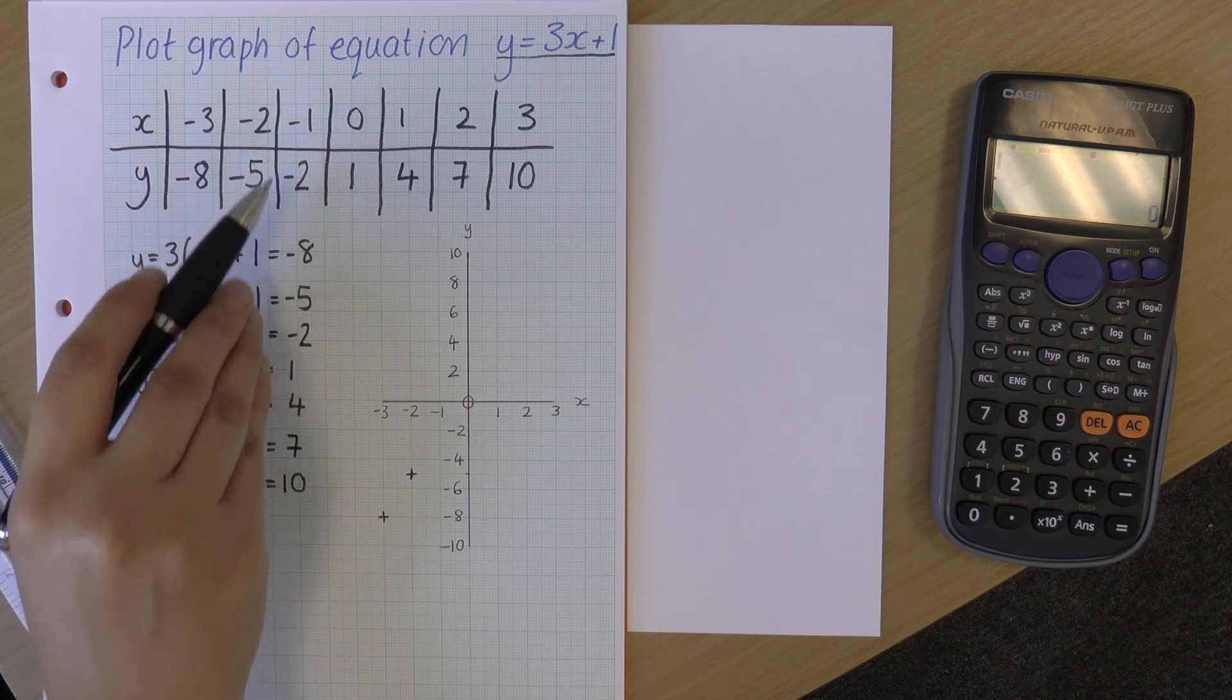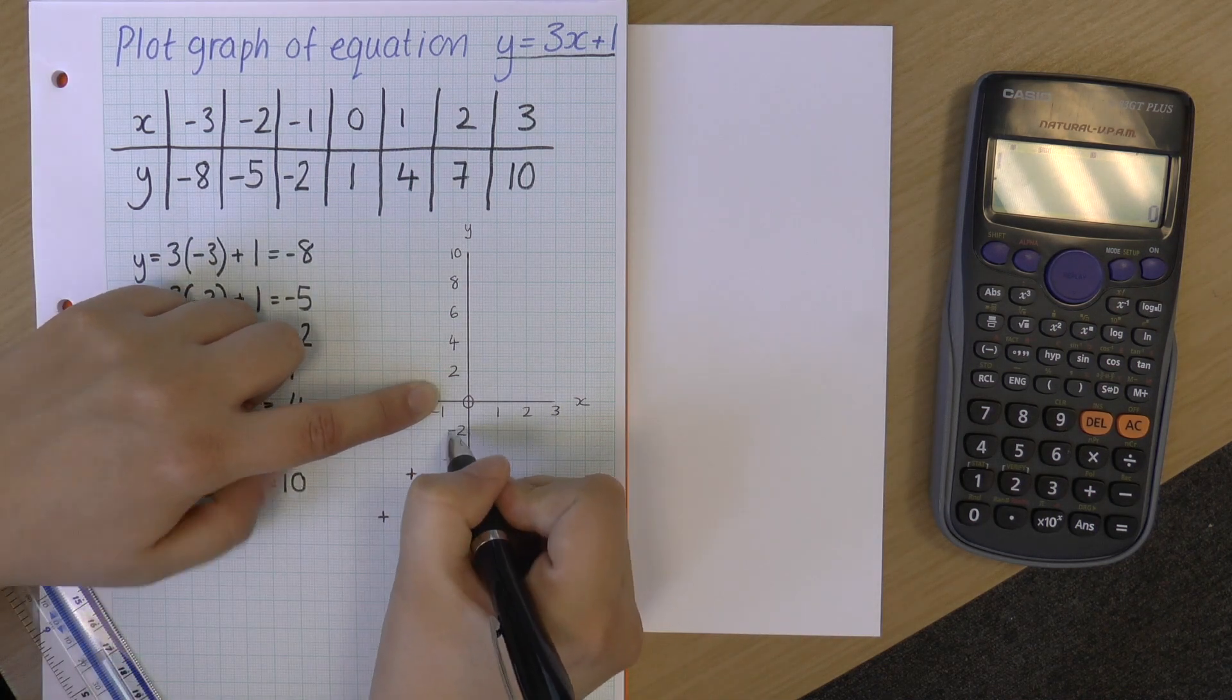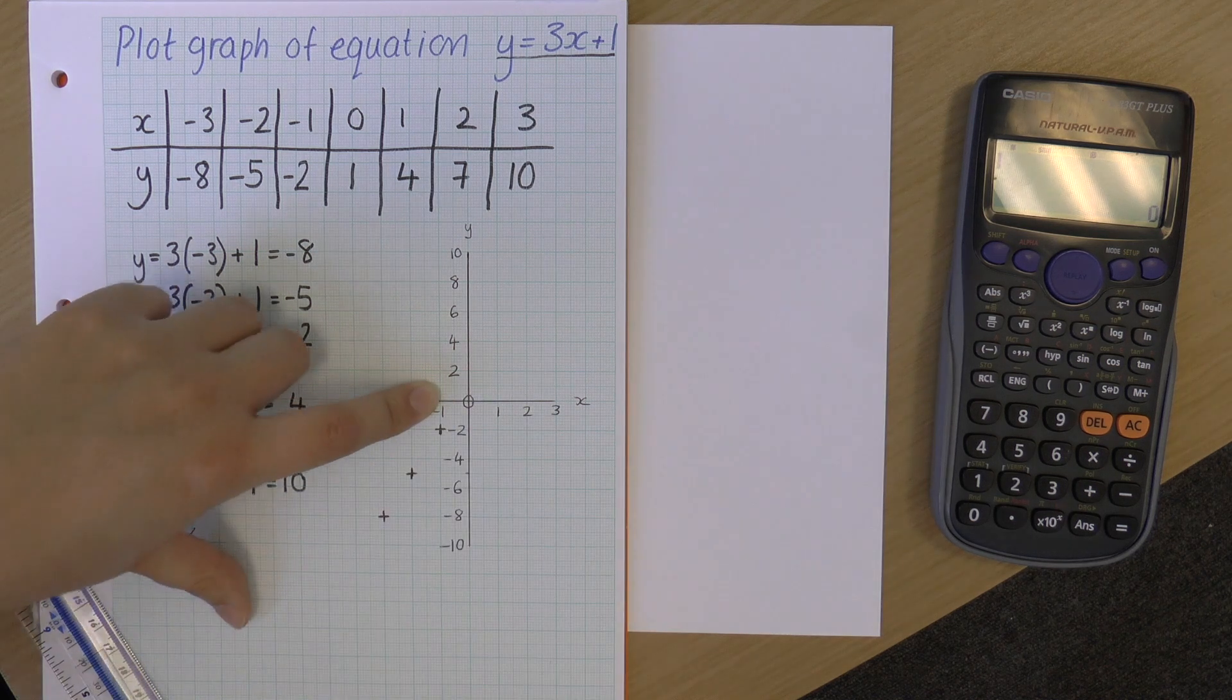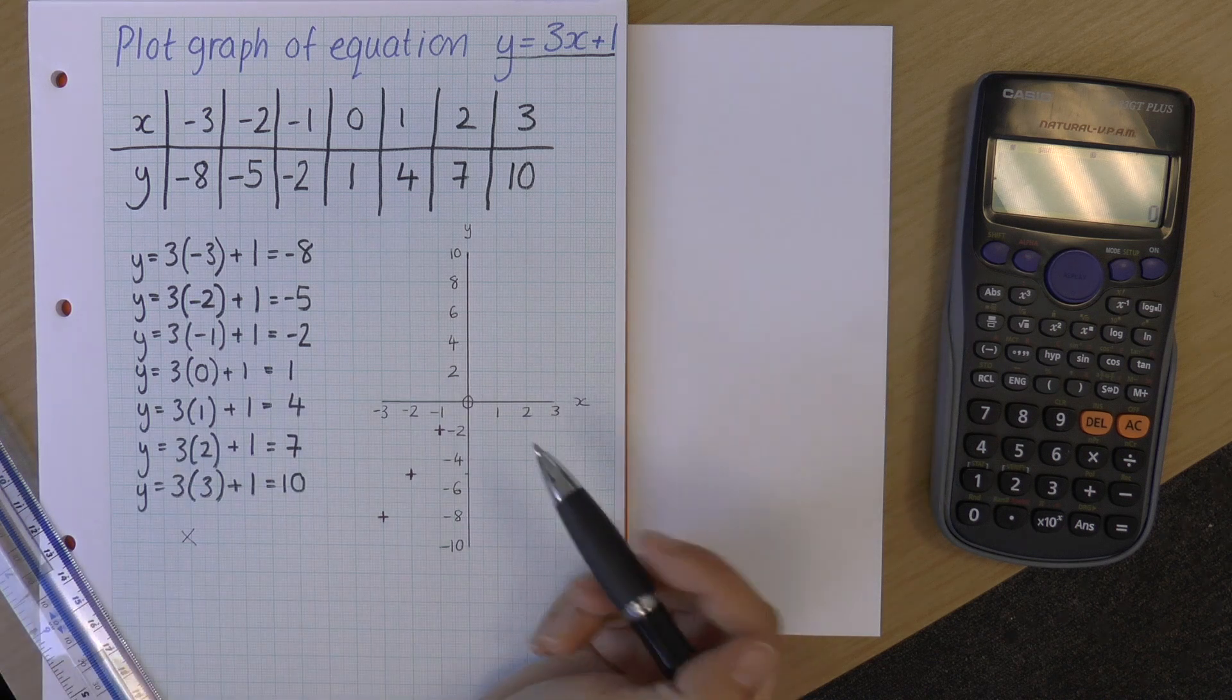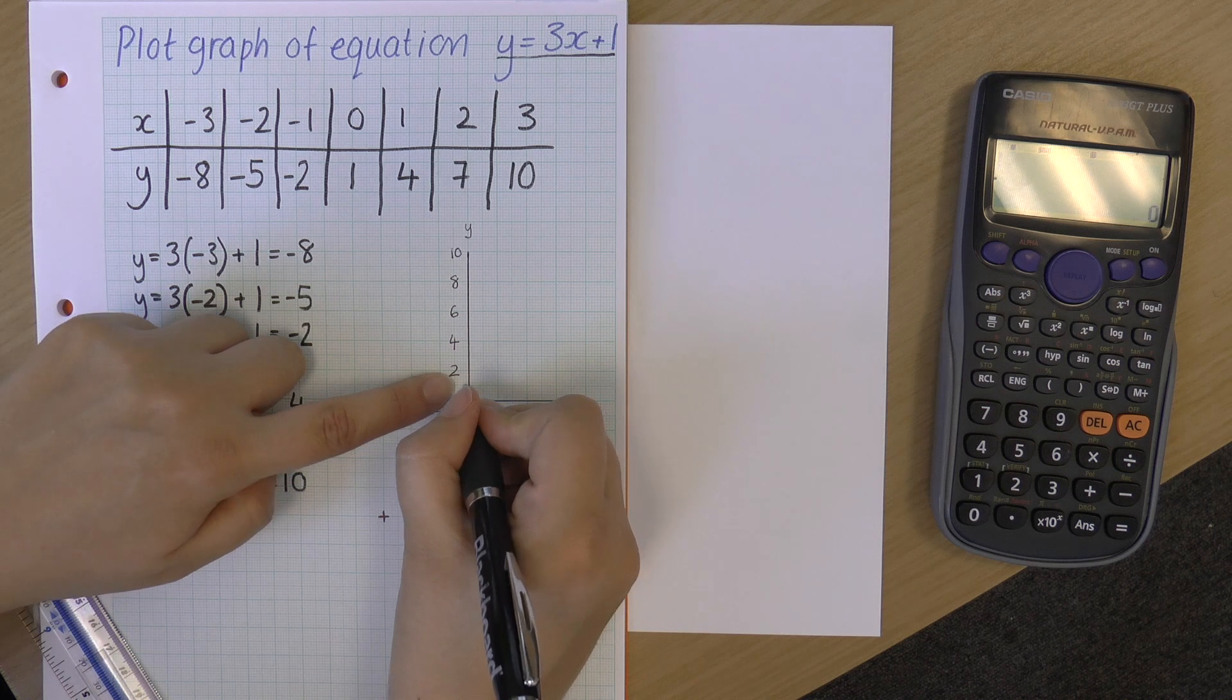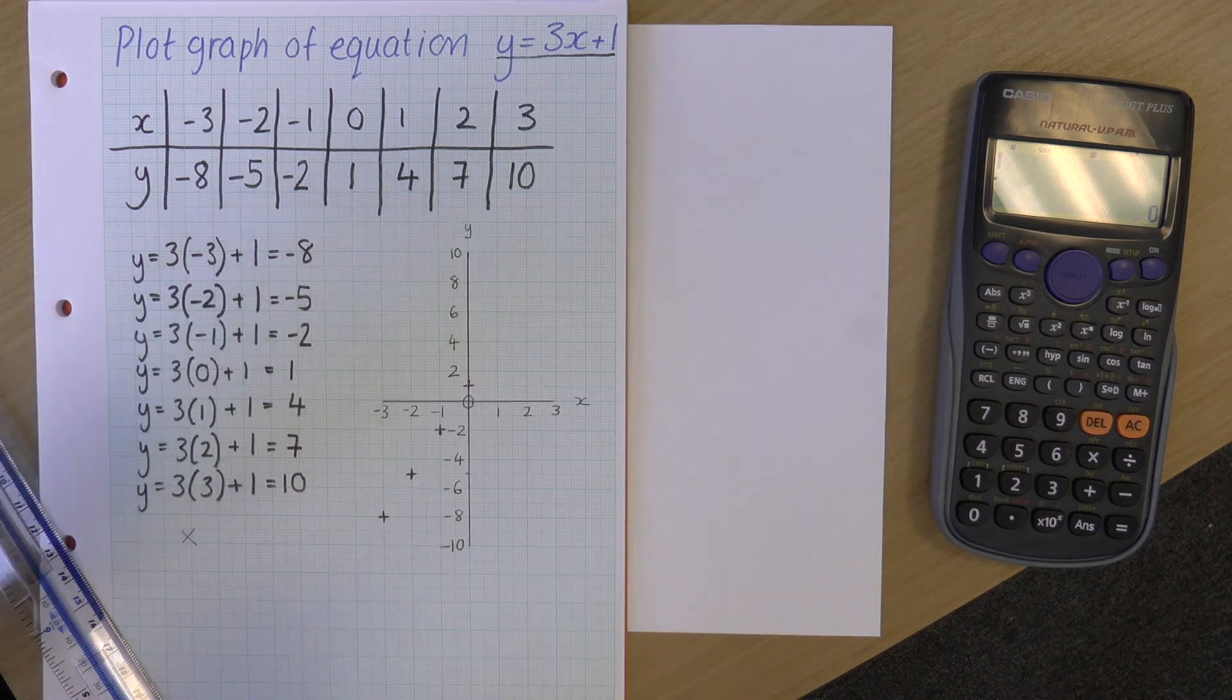Next one. x is minus 1, y is minus 2. So x is minus 1, y is minus 2. So that goes there. x is 0, y is 1. So x equals 0, y is 1. Now this is on the y axis, so it's there.